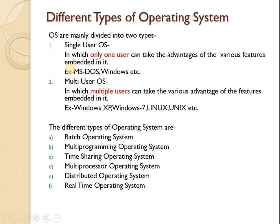In a single-user operating system, only one user can take advantage of the various features embedded in it. It has limited features accessible to a single user only. It must be installed on every individual machine, does not have advanced features, and provides limited facilities. Examples of single-user operating systems are MS-DOS and Windows.